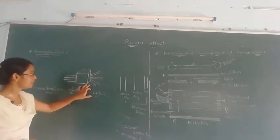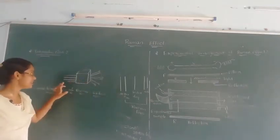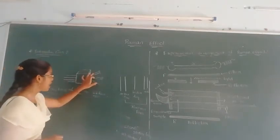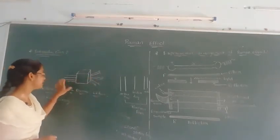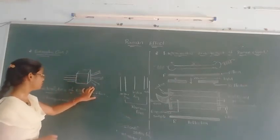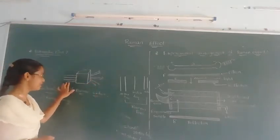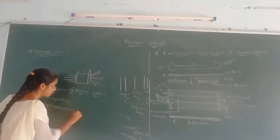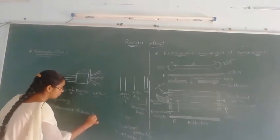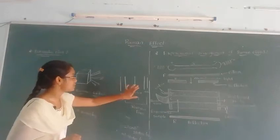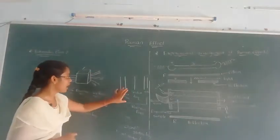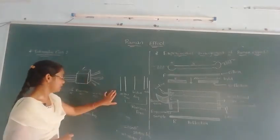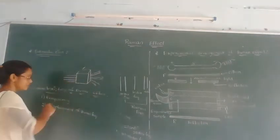Characteristics of the Raman effect. First point: the frequency of the Raman lines depends upon the frequency of the incident light. Second point: the displacement of the Raman lines depends on the scattering substance. But the displacement of Raman lines does not depend upon the frequency of incident light.